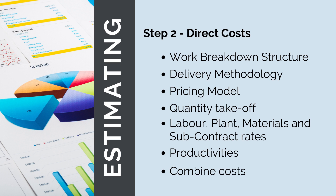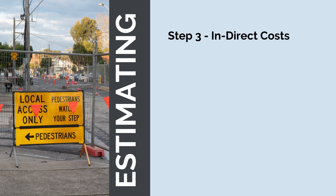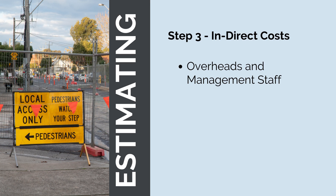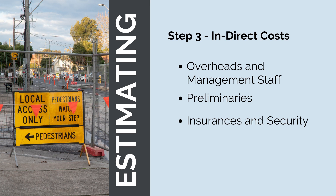Once we've worked out our direct costs, or in parallel with working them out, we can estimate our indirect costs. Indirect costs will vary from project to project, but there are three broad groups to price. First, overheads and management staff — the salaries and compensation of all project managers, engineers, supervisors and support staff who will help deliver the project. Second, preliminaries — a broad category covering all other site running costs like site sheds, cleaners, security guards and site labour. Third, any insurances and security required, and any escalation or finance costs associated with delays in payment or increases in prices.